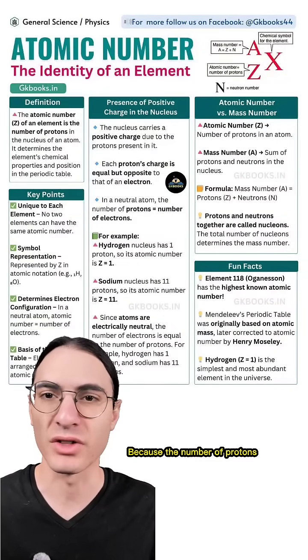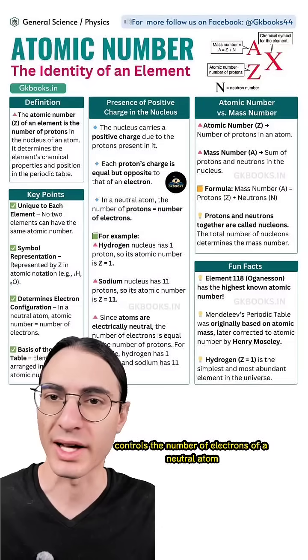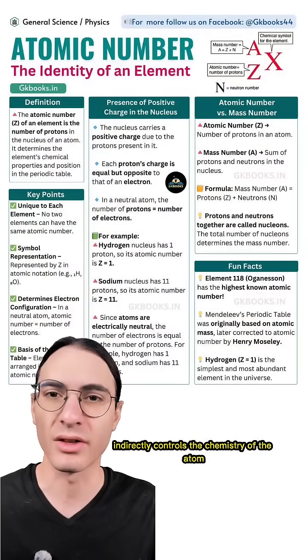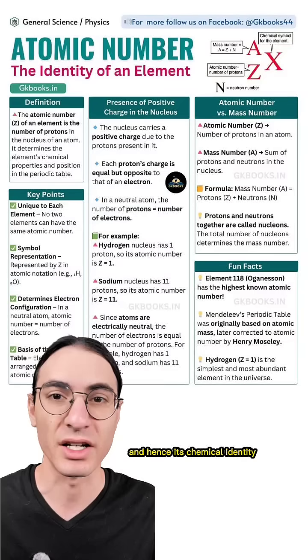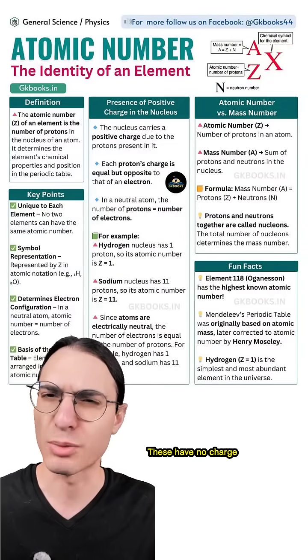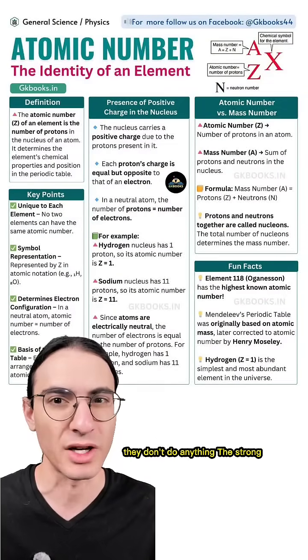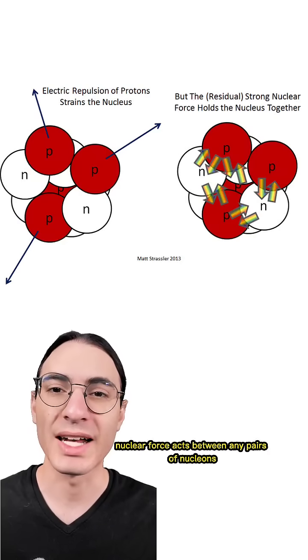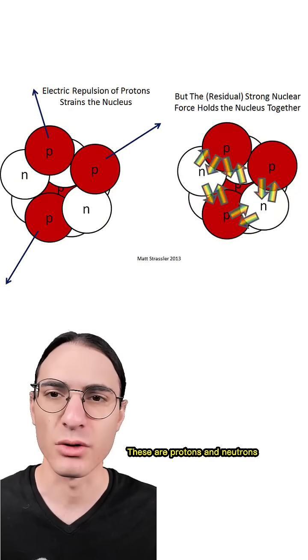Because the number of protons controls the number of electrons of a neutral atom, the number of protons indirectly controls the chemistry of the atom and hence its chemical identity. But in the nucleus, you can also find neutrons. These have no charge, but don't let that fool you into thinking they don't do anything. The strong nuclear force acts between any pairs of nucleons - protons and neutrons.